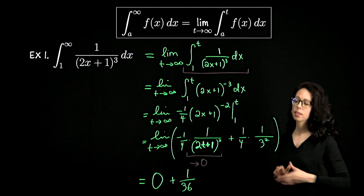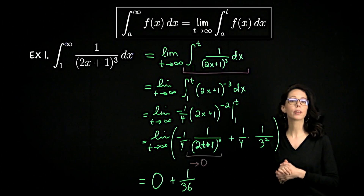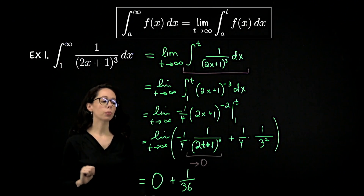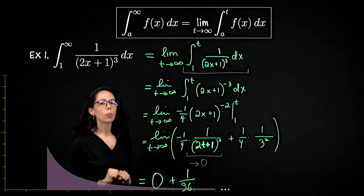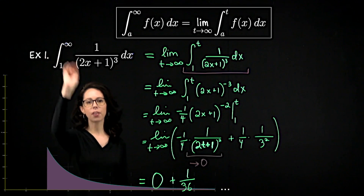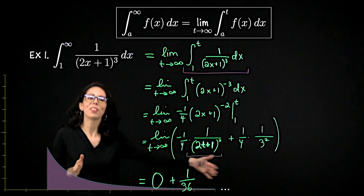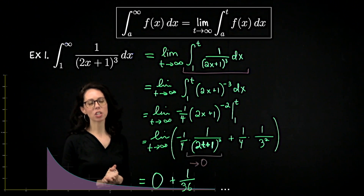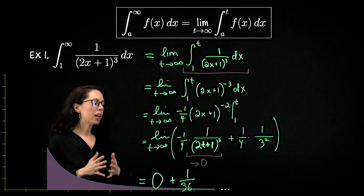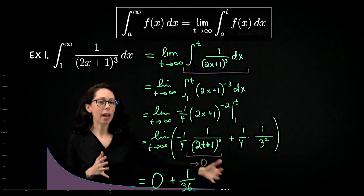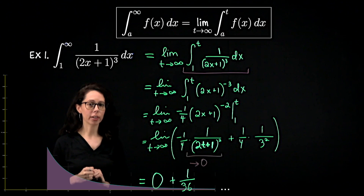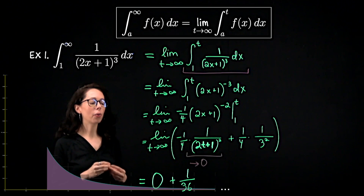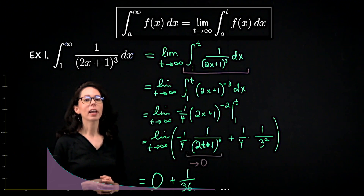So this improper integral converges. This integral that we started with exists and equals the real number 1/36. Conceptually, if you were to graph this function over the domain from 1 to infinity, the area along the domain appears to go on forever, but it adds up to a total of 1/36 units of area. So although our domain is infinite, the area is finite.